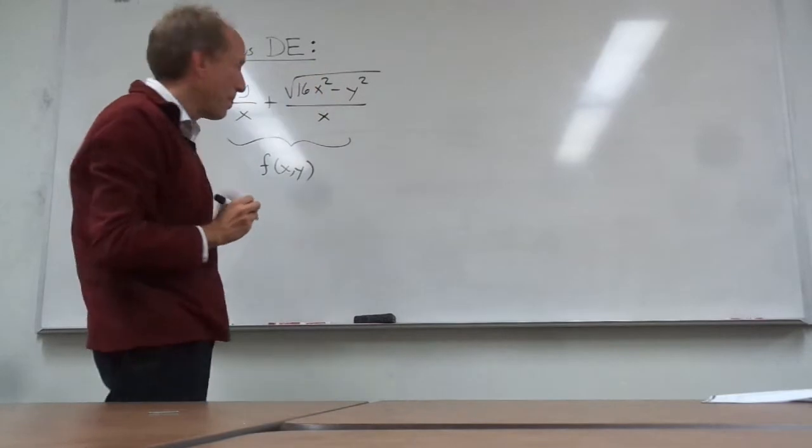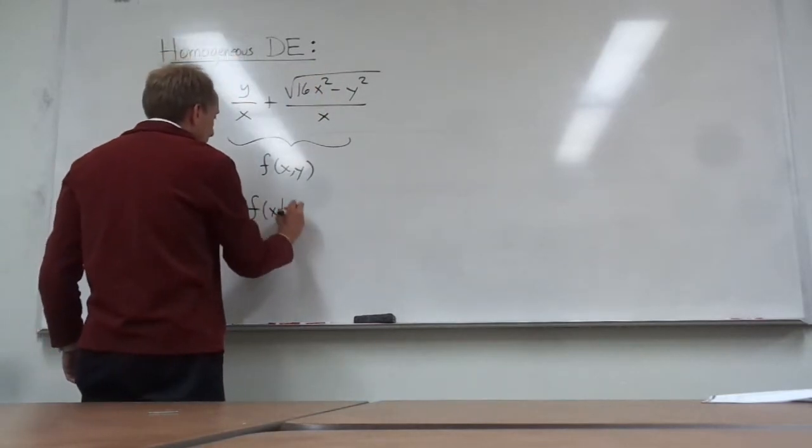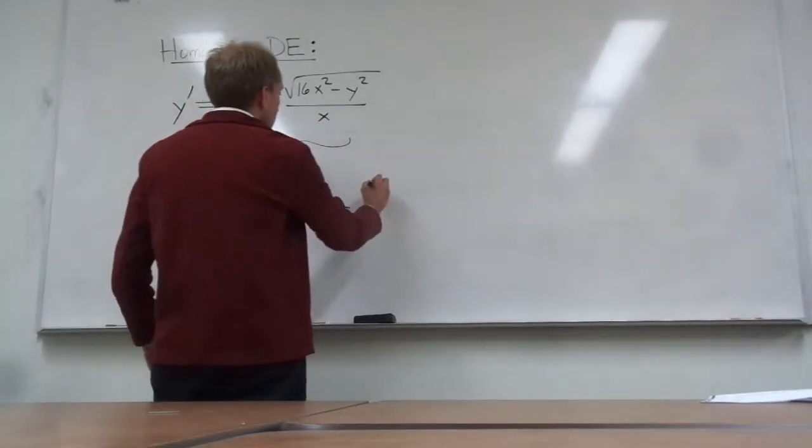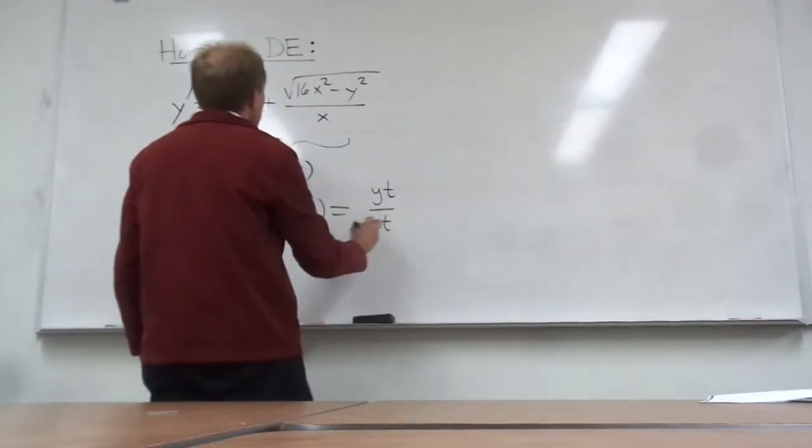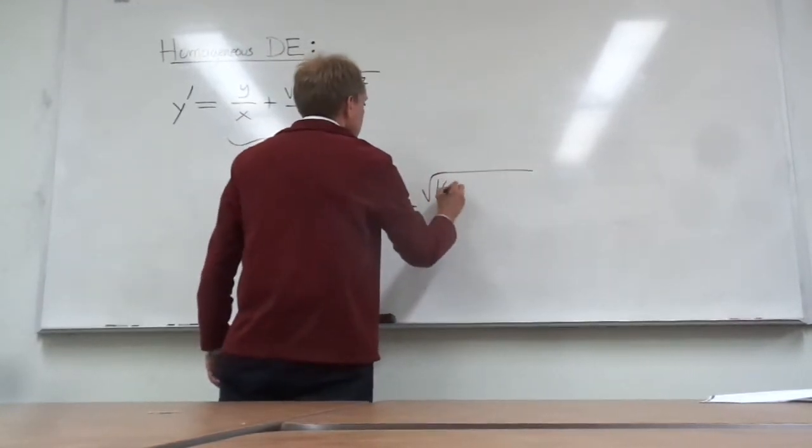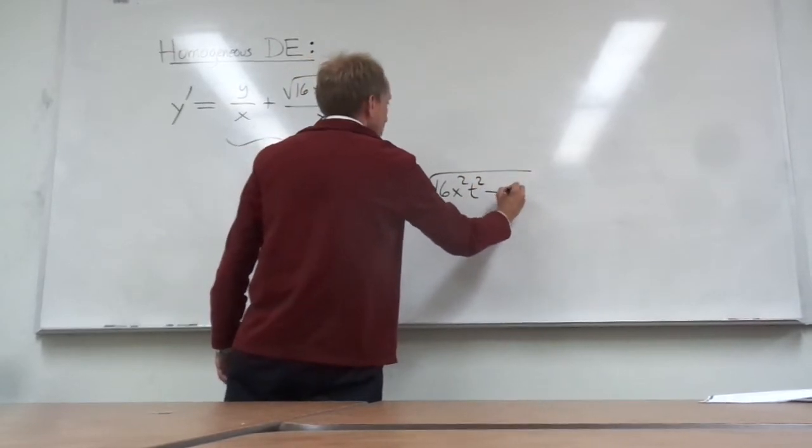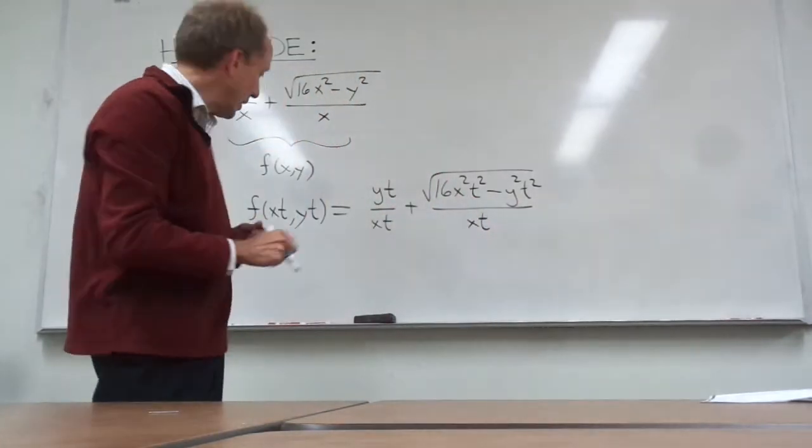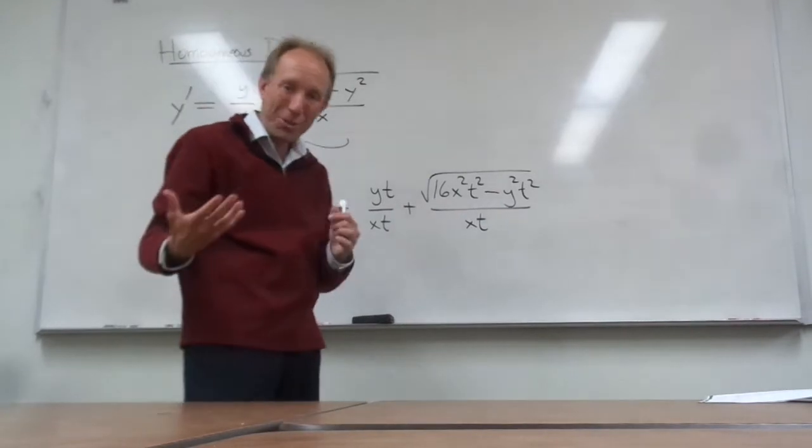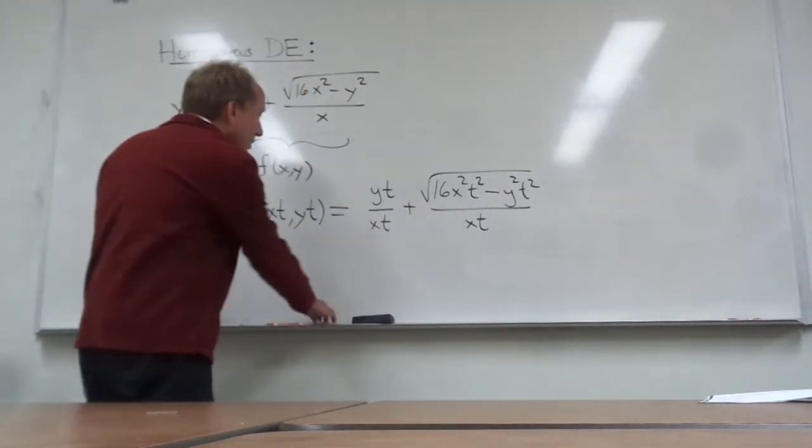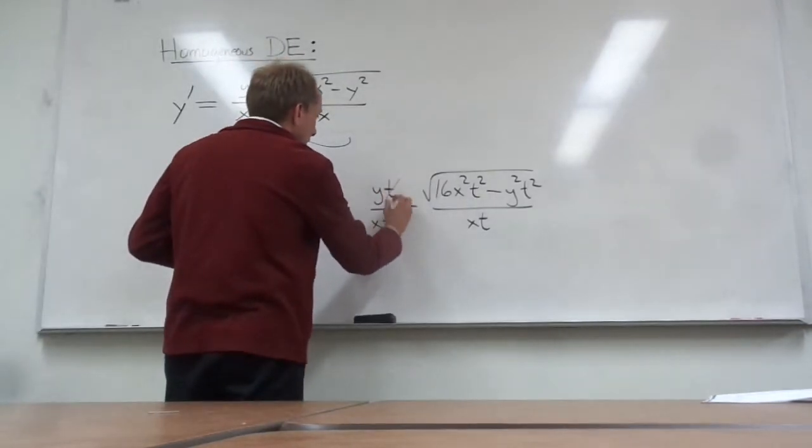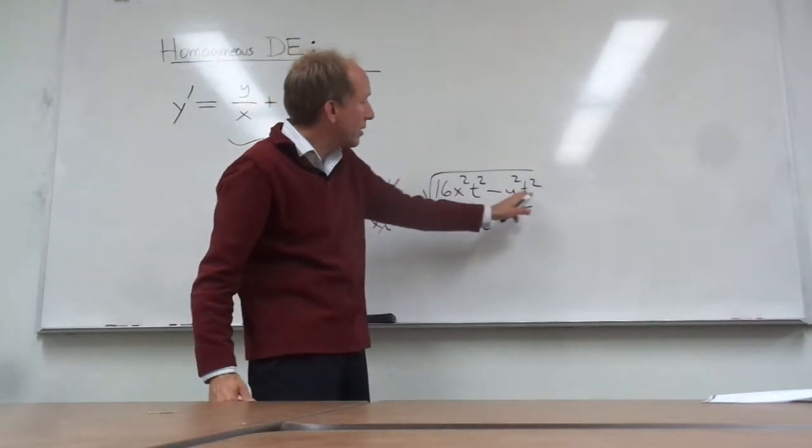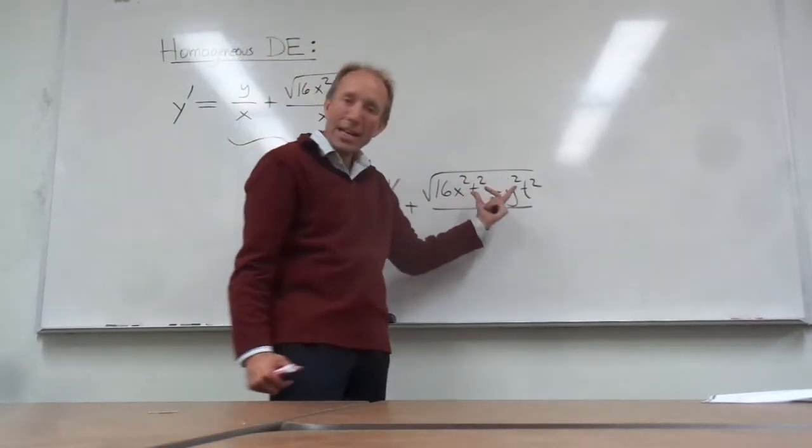Now if I attach a t next to every single x and every single y, let's look at what we get. We're going to have yt over xt plus the square root of 16 x squared t squared minus y squared t squared all over xt. And the question is can you get all of those t's to cancel out? Well, the answer is yes you can. Certainly right here we can cancel these t's in this expression.